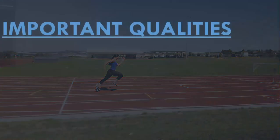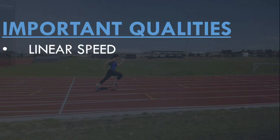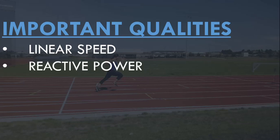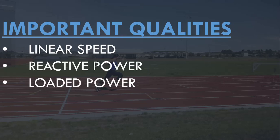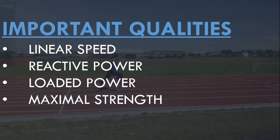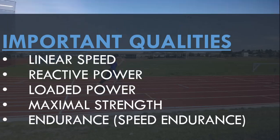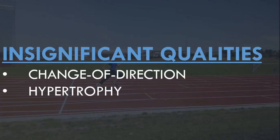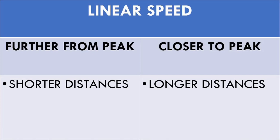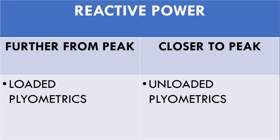Next we'll look at how we can use this method for a 100 meter sprinter. For a 100 meter sprinter the obvious quality that is most important is linear speed. Other qualities that can enhance linear speed performance include reactive power for efficient use of elastic properties of muscles and tendons, loaded power for propulsion out of the blocks and early acceleration, maximal strength for indirect enhancement of all other qualities, and endurance to ensure maximal velocity is maintained until the end of the race.